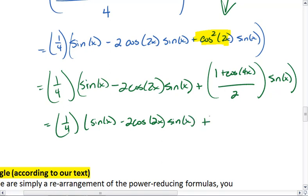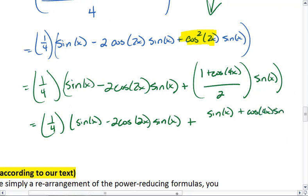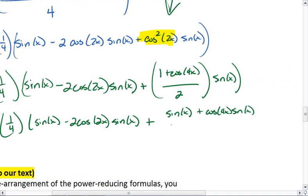We're going to distribute our sine over here, though. So we get sine of x plus cosine 4x sine x all over 2.